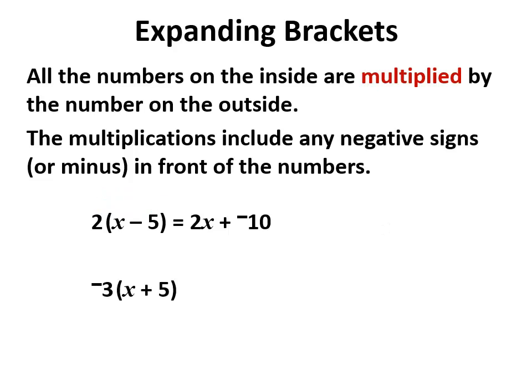Again, this time the negative's on the outside with the 3. When we multiply in, we don't just multiply the 3—we multiply in the minus as well. Minus 3 times x is -3x, minus 3 times 5 is -15, or -3x - 15.